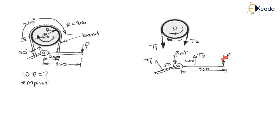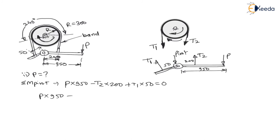Applying equilibrium: summation of moments about the pivot equals zero. P is trying to rotate the lever clockwise, so P × 950. T2 is anticlockwise, so minus T2 × 200. T1 is clockwise, so plus T1 × 50 equals zero. Substituting: P × 950 − 5,263 × 200 + 15,000 × 50 = 0.